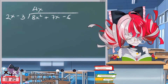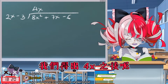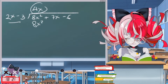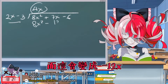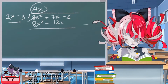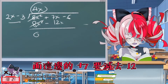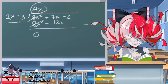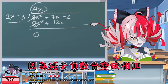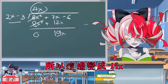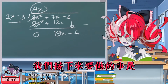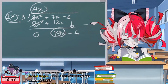Once we get the 4x, we multiply it by two x minus three, which gives us 8x squared minus 12x. Then we subtract it, so the 8x squared becomes zero. Then there's plus seven x subtracted by minus 12x — minus meets minus becomes plus — so this becomes 19x. Then we bring down the minus six.